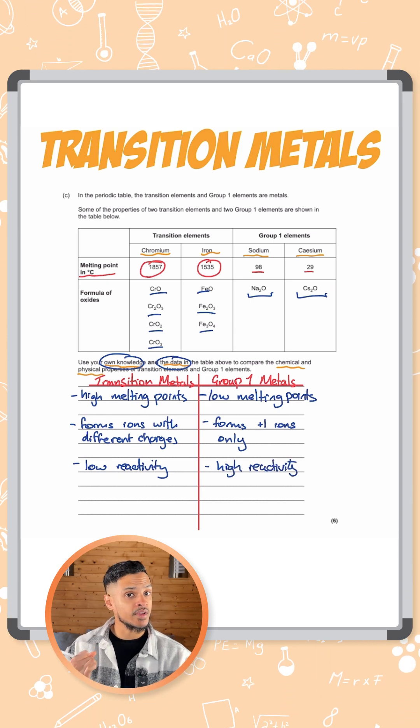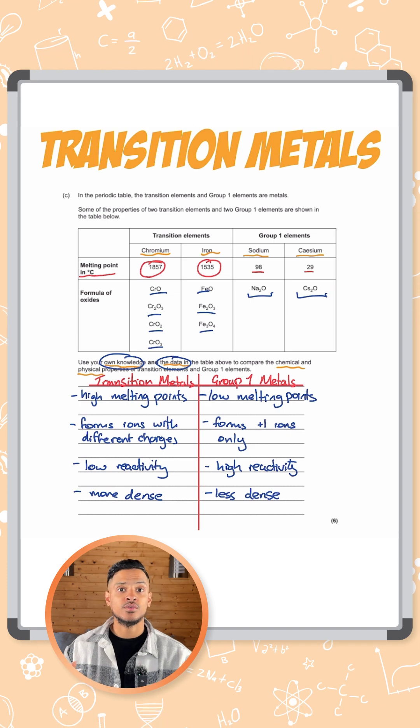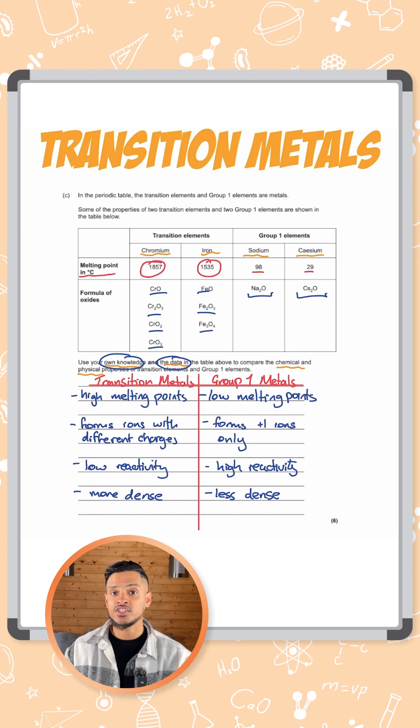Transition metals are generally more dense. Another thing we can talk about is the fact that group one elements are soft whereas transition metals are much harder.